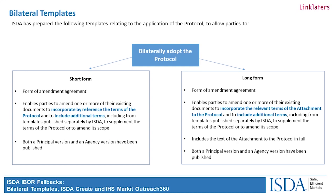It's also possible using the short form of the amendment agreement to agree to supplemental terms that we'll come on to in a few minutes. The long form actually contains the entire text of the amendment provisions, which are in the attachment to the protocol. Counterparties could, if they chose to, modify the terms of those amendments as they agreed to them bilaterally. They could also add additional supplemental terms based on the template language that we're going to talk about, or other supplemental provisions that they want to add to this bilateral agreement. So the long form is much longer, and in some cases will include provisions that are not applicable, but it does allow for more flexibility.